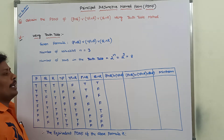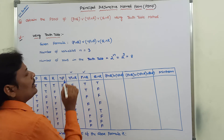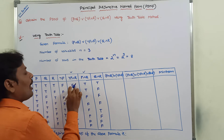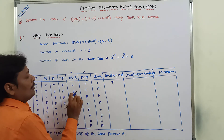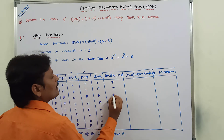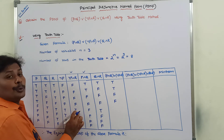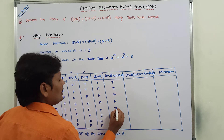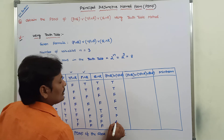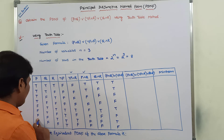Next, for (P∧Q) ∨ (¬P∧R), we combine the P∧Q column and the ¬P∧R column using the OR connective. The resulting values are: false OR true = true, false OR false = false, false OR false = false, true OR false = true, false OR false = false.